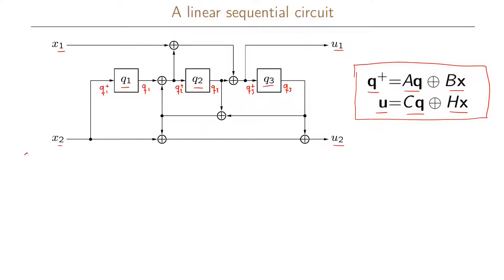Let us first write our next state variable q1+. From the picture, q1+ is simply equal to x2. For q2+, it is the sum at the XOR gate of q1 and what comes in from the other input, which is q2 plus q3. So q2+ can be written as q1 + q2 + q3.